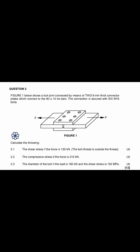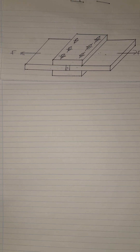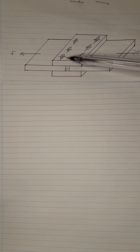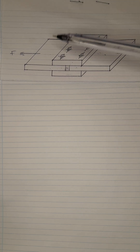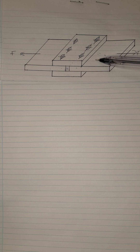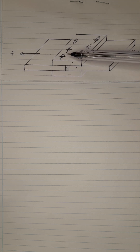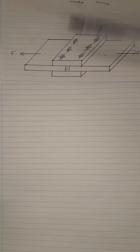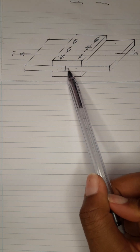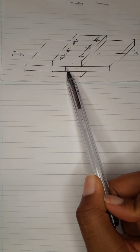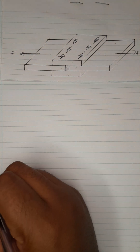We are going to go through those questions one by one. We have this figure right here — two connector plates and two tie bars. These two tie bars are butt joint connected by the two connector plates. This little gap that you see here is an indication of a butt joint connection.